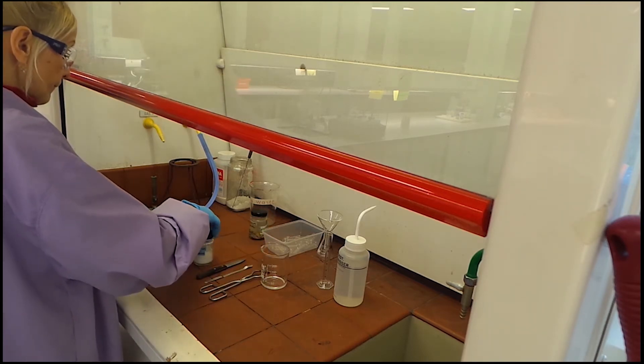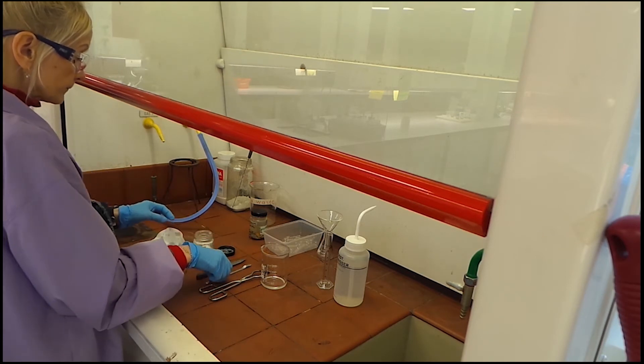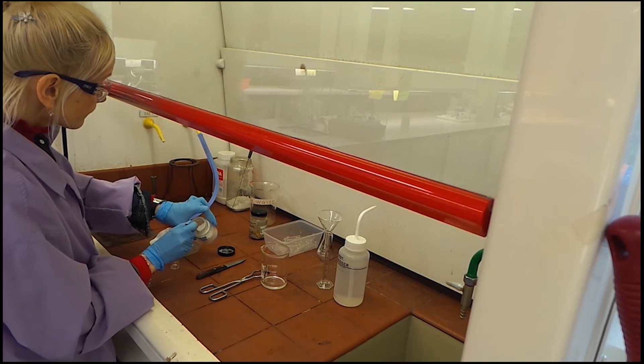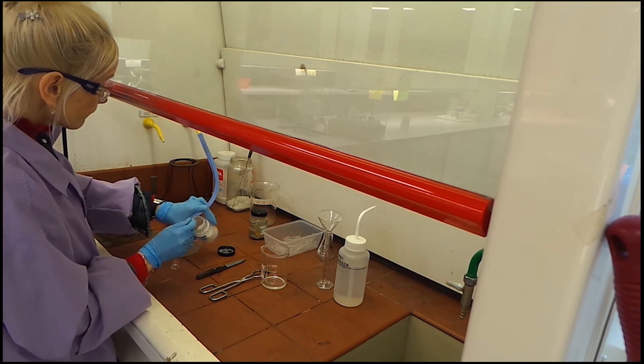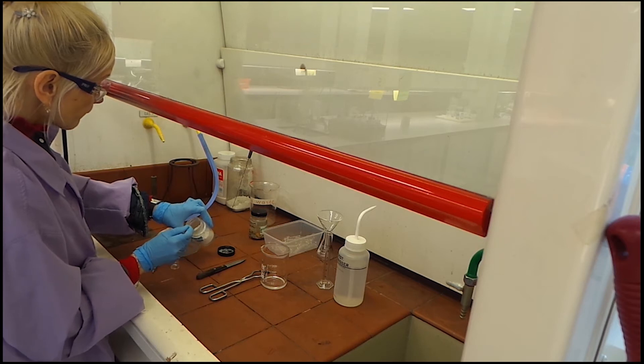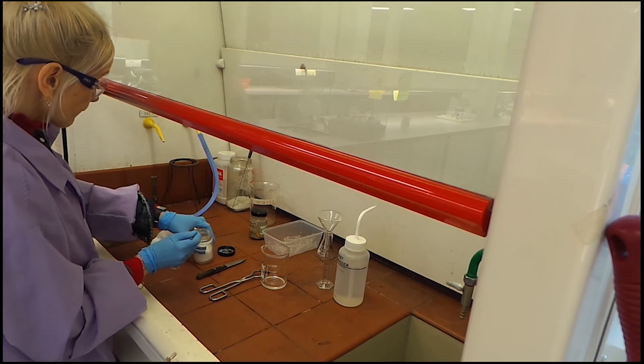Then add about 10 mg of your solid unknown using a spatula, or three drops of a liquid unknown using a Pasteur pipette into the ignition tube, being careful not to allow the unknown to touch the sides of the ignition tube.